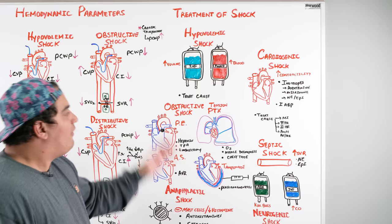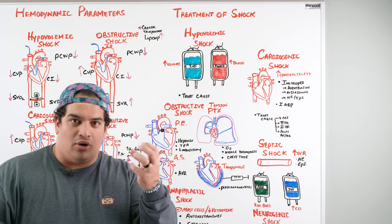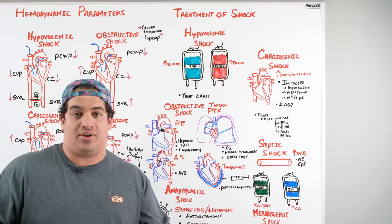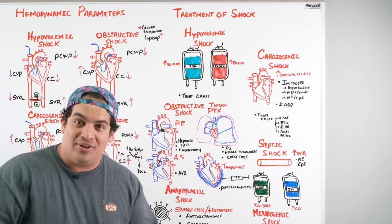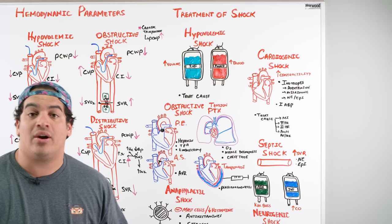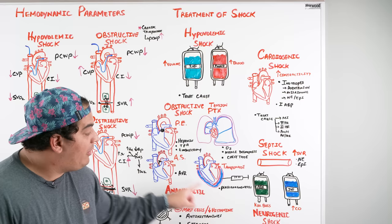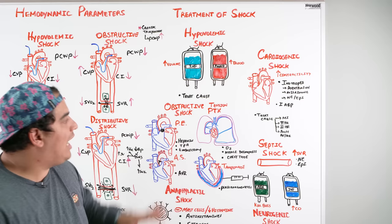Treatment of obstructive shock: treat the cause. For PE — heparin, tPA, or embolectomy. For tension pneumothorax — needle decompression, then chest tube with supplemental oxygen. For critical aortic stenosis — aortic valve replacement. For cardiac tamponade — pericardiocentesis and drain placement. Support blood pressure with vasopressors as needed.